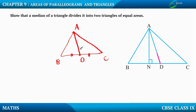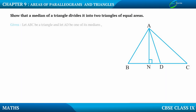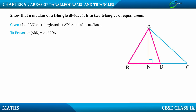According to the theorem, this median divides the triangle into two equal areas. So we are supposed to prove that this area and this area are equal — that is, area of triangle ABD is equal to area of triangle ACD. It is given that let ABC be the triangle and AD be one of its medians. We are supposed to prove that area of triangle ABD is equal to area of triangle ACD.